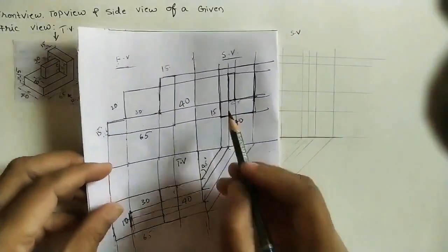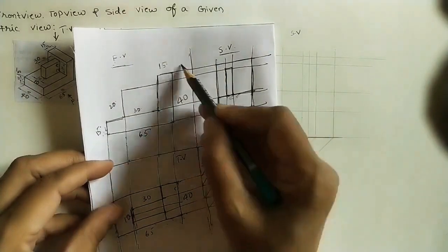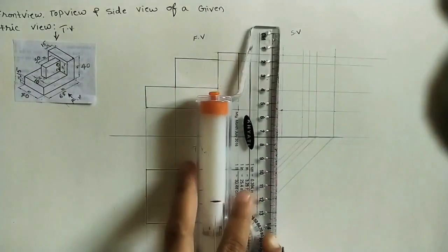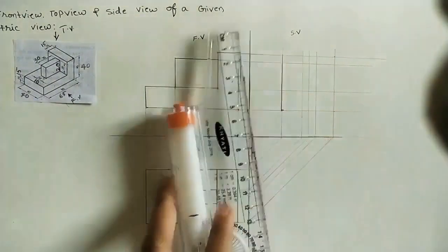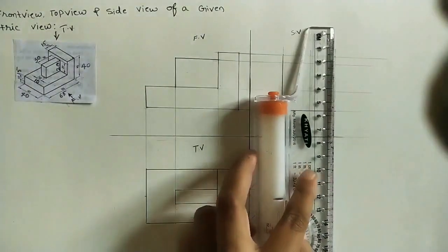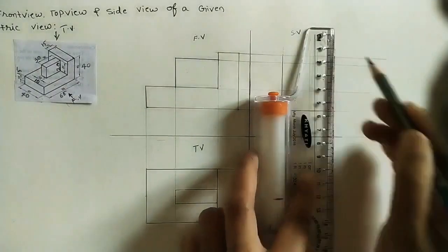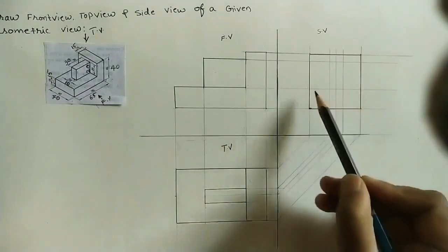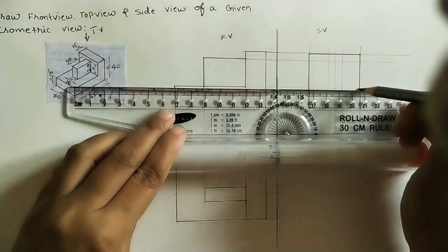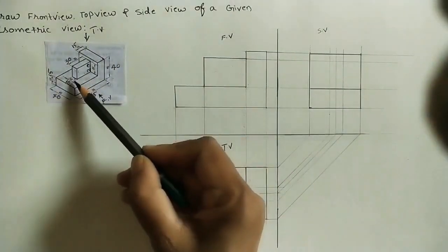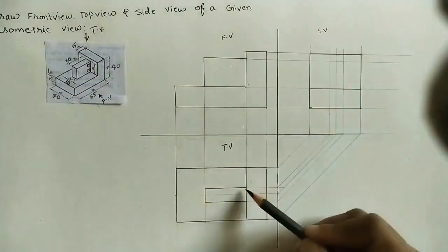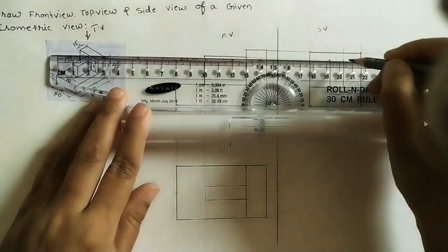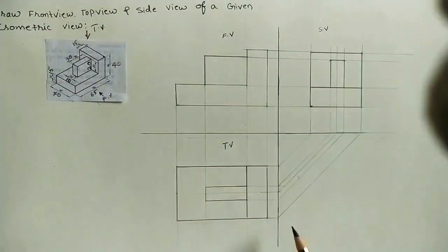Here we will do the side view. In the side view we can see a box of 40 by 40. This height is 40 — do the box 40 by 40, joining these points. After that in the side view we can also see this height of 15 mm — we took this height from the projector line, so make it dark. We can see this box up to 40. In the front view we can also see a small box with thickness 10 mm at the middle, and height 30 mm. We can make this box — 30 mm by 10 mm. We got this box from the front view and top view projector lines. This is the side view.